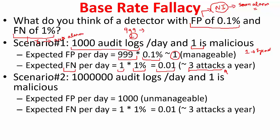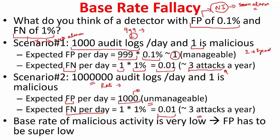Now let's change the scenario to 1 million audit logs per day of which one is malicious. The rate of attacks is very low, but you are generating a lot of audit logs. With the same 0.1 percent false positive rate, the expected false positives per day is about 1000 — meaning the sysads will have a very difficult time managing thousands of false alarms per day. Whereas the expected false negatives per day is still 1 percent of 1, which is 0.01 — roughly 3 attacks per year, still manageable. So it depends on the base rate: if the base rate of malicious activity is very low, the false positive rate also has to be super low, otherwise the sysads have to deal with a lot of headache.